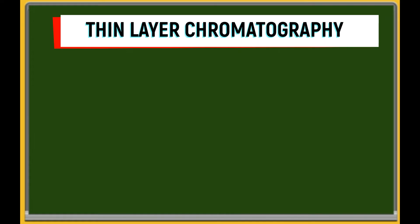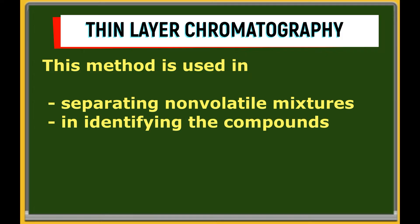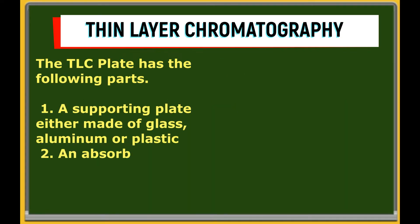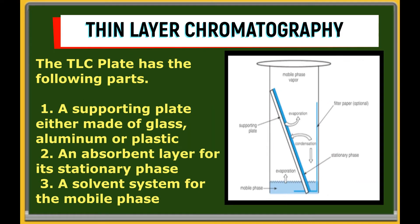Another separation technique used in organic chemistry laboratory is thin layer chromatography or TLC. The method is used in separating non-volatile mixtures, in identifying the compounds present in a mixture, and even determining the purity of a substance. Instead of using chromatography paper, TLC uses a supporting plate either made of glass, aluminum or plastic, an absorbent layer for its stationary phase made of silica, for example, and a solvent system for the mobile phase altogether known as the TLC plate.